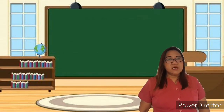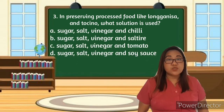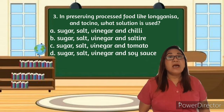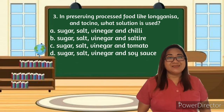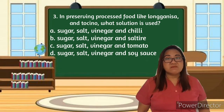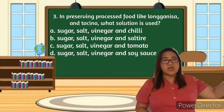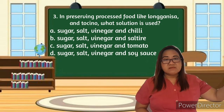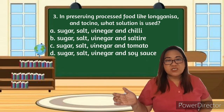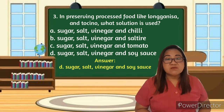Number three: In preserving processed food like longganisa and tocino, what solution is used? A) Sugar, salt, vinegar and chili. D) Sugar, salt, vinegar, and soy sauce. Who can answer question number three? Algen, your answer is wrong. Who else can answer? Okay, Christian — very good! You got the correct answer. Christian's answer is letter D: sugar, salt, vinegar, and soy sauce.